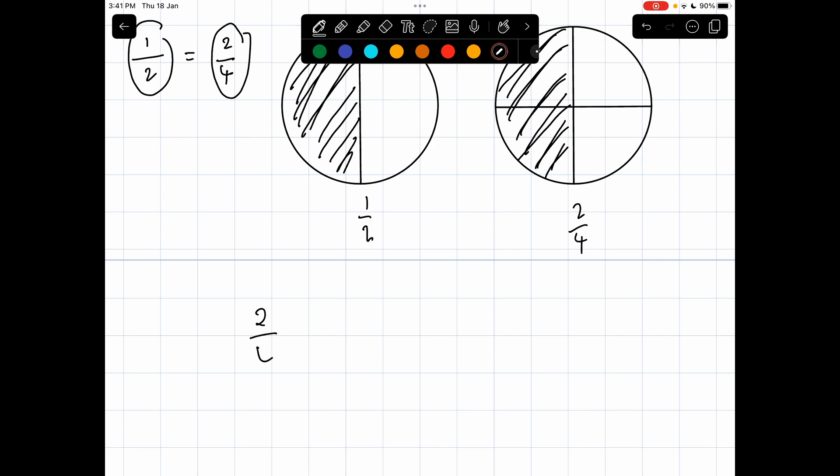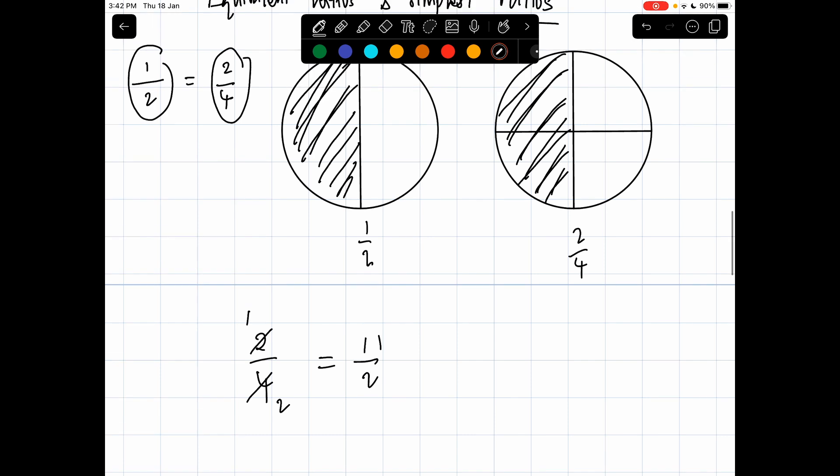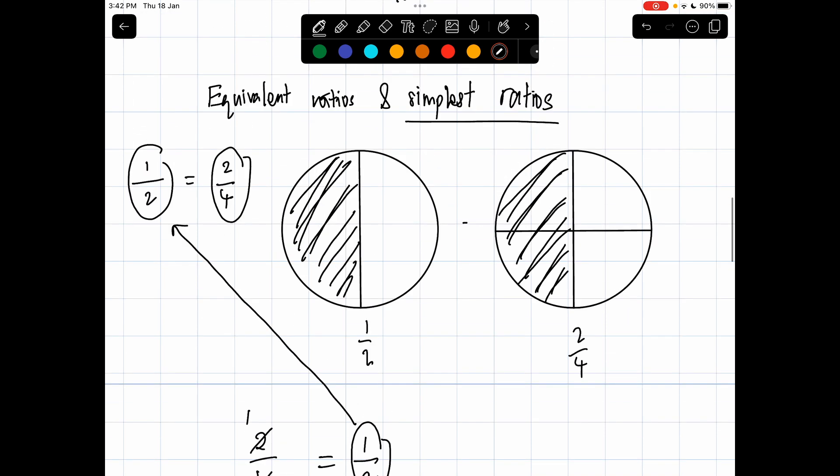So when you have 2/4, it is always wise to check whether you can simplify them any further. By simplification, I mean whether these two numbers appear in the same multiplication table. Two and four are quite simple - they appear in the multiplication table of 2, where 1 × 2 = 2 and 2 × 2 = 4. So we have 1/2, which is the same as the earlier one. That's why these two are equal to each other.